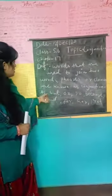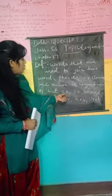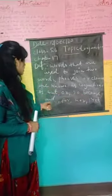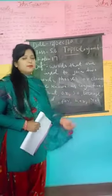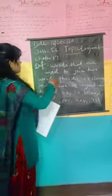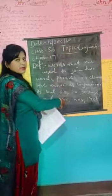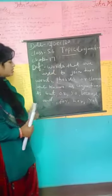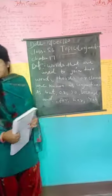Here is an example: but, or, so, because, and, for, nor, yet. So I hope you all understand by this definition and example. Let's see their uses in these sentences.